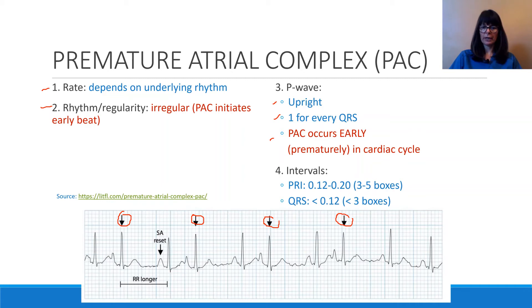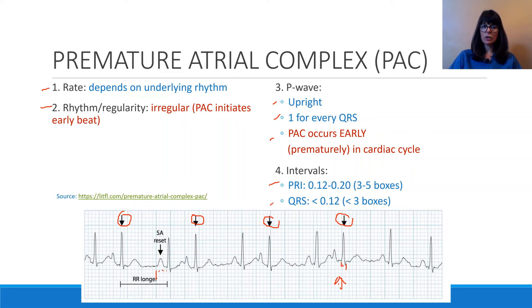Looking at intervals, they should be essentially the same whether we look at the early beat or the regular beat. Finding the third beat, we count four boxes for the PRI, which is 0.16 — a normal PRI. For the QRS, counting two boxes gives us 0.12 seconds — a normal QRS. So the only abnormal findings here are the irregular rhythm, the differently shaped P wave, and the fact that the beat occurs early.